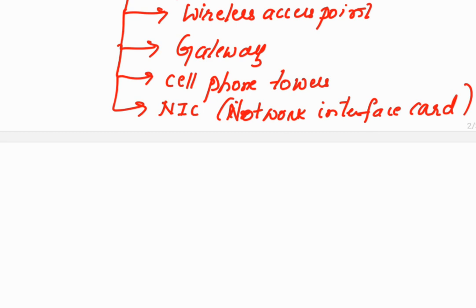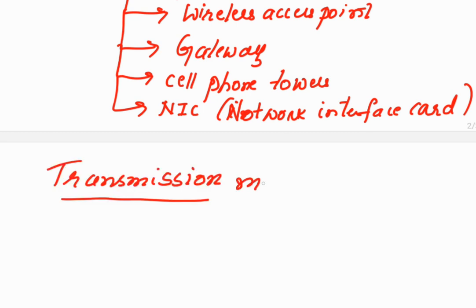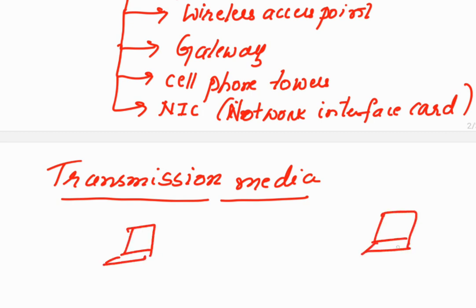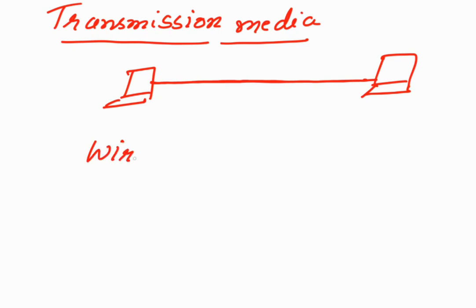The second type of component is transmission media. Without a transmission medium, we cannot send or receive data. Unless you connect two nodes, it is not possible to send or receive data. This medium can be a wired medium or a wireless medium.